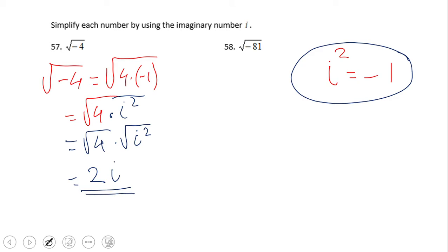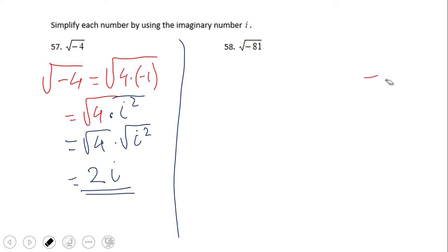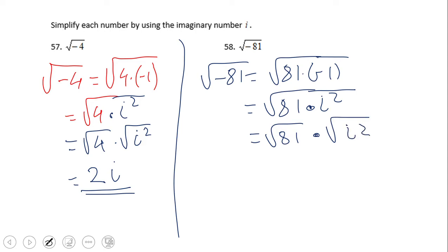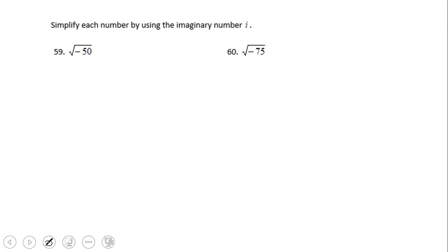That gives us two i. So the square root of negative four is two i, which is an imaginary number — also called a complex number. You're not wrong calling it either way. Go ahead and try number 58. If you end up with 9i, then you did a wonderful job.